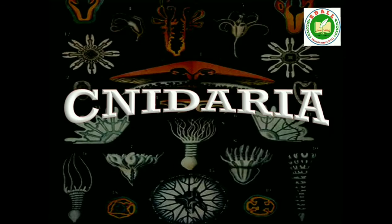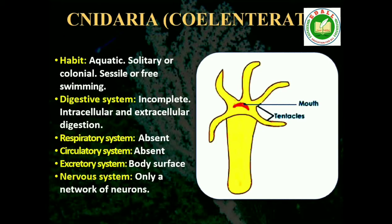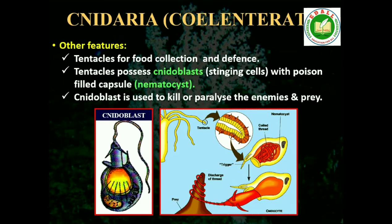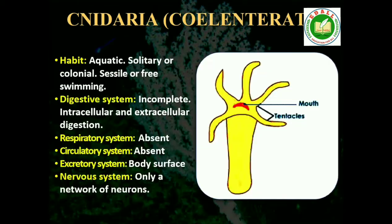Second is Phylum Coelenterata, also called Cnidaria. They are aquatic, mostly marine, sessile or free-swimming, radially symmetrical animals. The name Cnidaria is derived from the cnidoblasts or cnidocytes, which contain the stinging capsules or nematocysts, present on the tentacles and the body. Cnidoblasts are used for anchorage, defense and for the capture of prey.